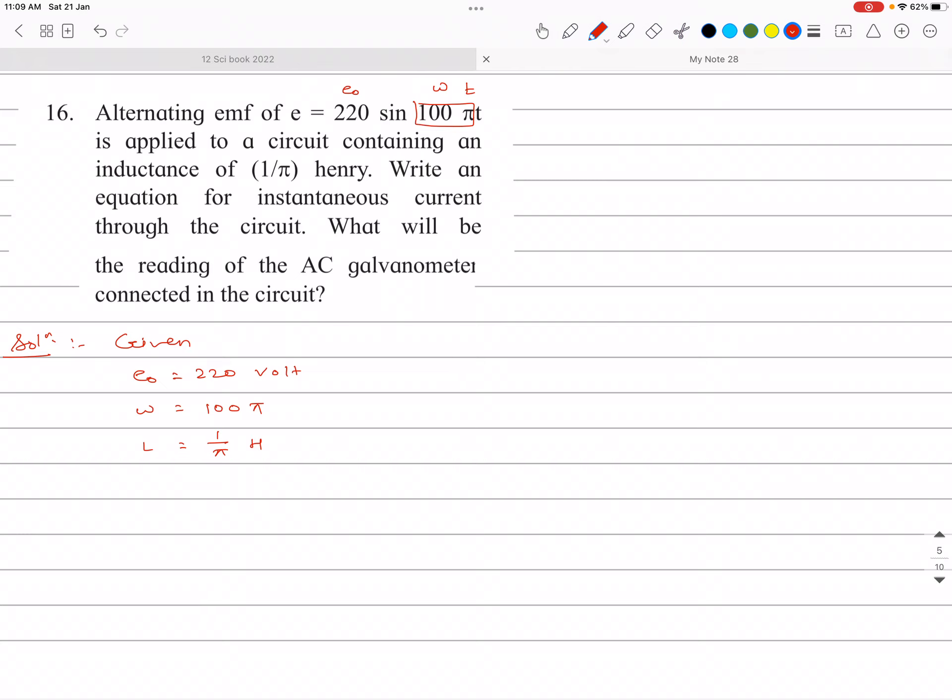We write an equation for instantaneous current through the circuit. The formula for instantaneous current is I = I0 sin(ωT ± phase). Since this is an inductive circuit with only an inductor connected, current lags by phase π/2. So we write ωT - π/2.